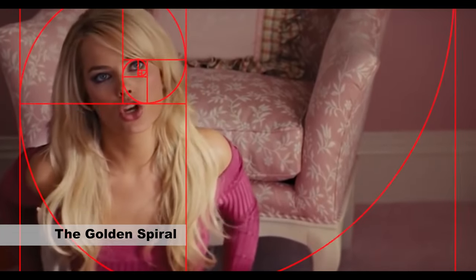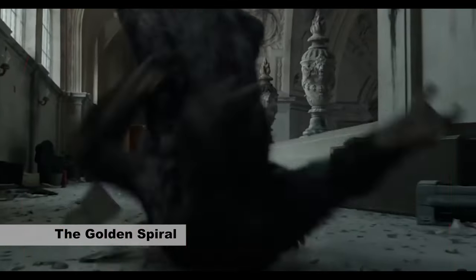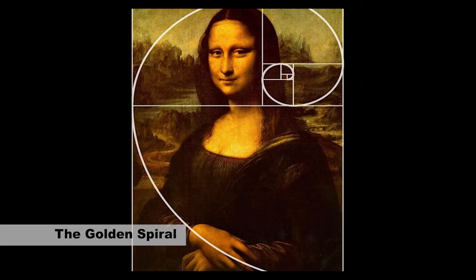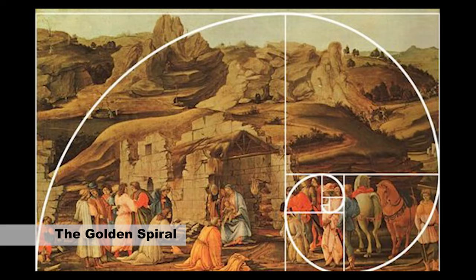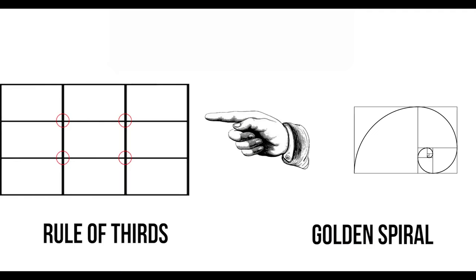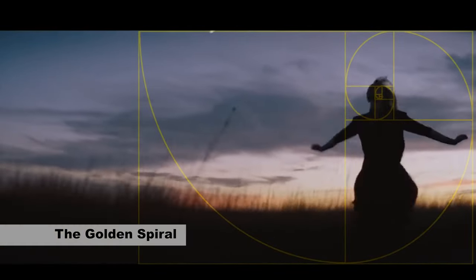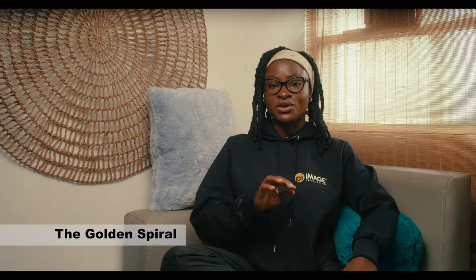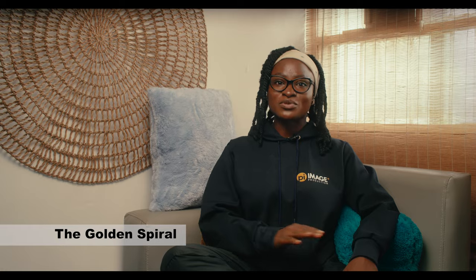Now we're going to talk about the golden ratio, also called the golden spiral, known as the divine proportion of phi — or if you want to impress folks, the Fibonacci spiral. It is a mathematical concept found in nature, art, and architecture. In its simplest form, it involves connecting your points of interest at the top coordinates of the rule of thirds. By dividing your frame using the golden ratio, the main subject or focal point is positioned at one of the critical points of intersection, creating a visually balanced composition.